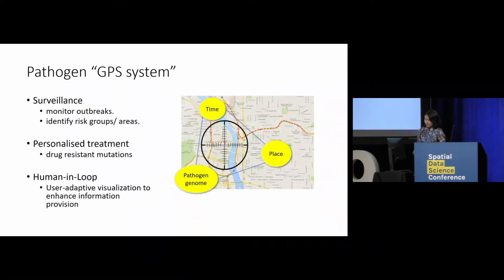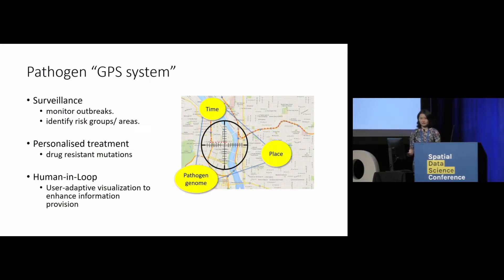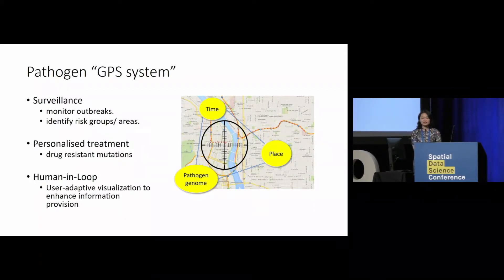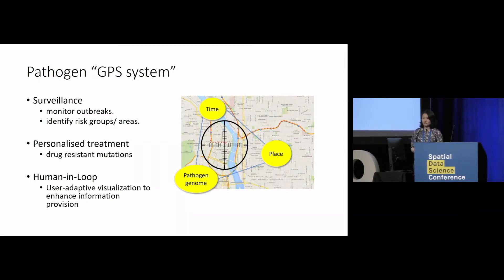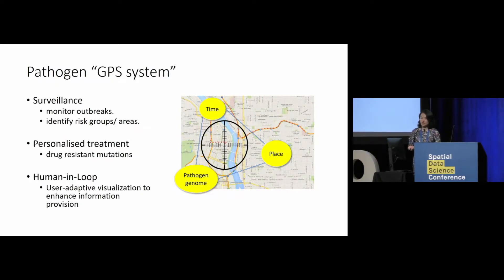We want to develop a GPS system by combining genome sequencing and time and place together. This would help us answer a lot of questions, including monitoring outbreaks of infectious disease and identifying risk groups. We can also design and implement personalized treatment based on drug-resistant mutations, and look into research on a human-in-the-loop framework — as we are facing very different user groups, communicating information to them in a better way is always of interest.